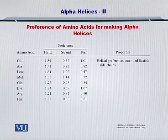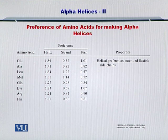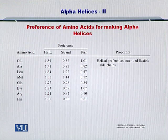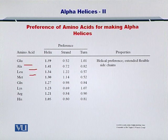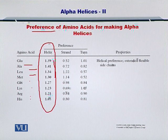And hence the alpha helix forms. Now, which amino acids prefer to form an alpha helix? Do all the amino acids prefer to form an alpha helix, or do only some of them? It is important because if all the amino acids were to have an equal propensity for making an alpha helix, then there will be no structural diversity in the protein structures. As you see in this table, I have listed the amino acids which prefer to make an alpha helix. These include alanine, leucine, methionine and so on and so forth.